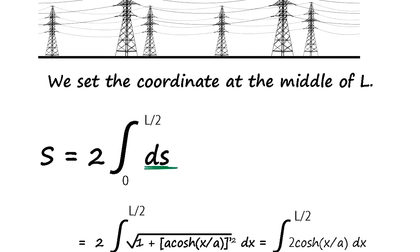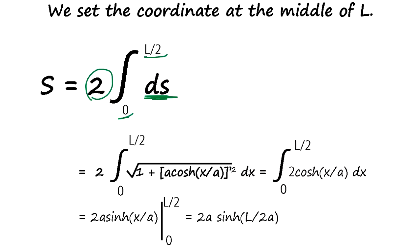So basically, it's a line integral, 0 to L over 2, and we twice that. So that's the total length. And ds is, as you know, square root of 1 plus (dy/dx) squared, right?